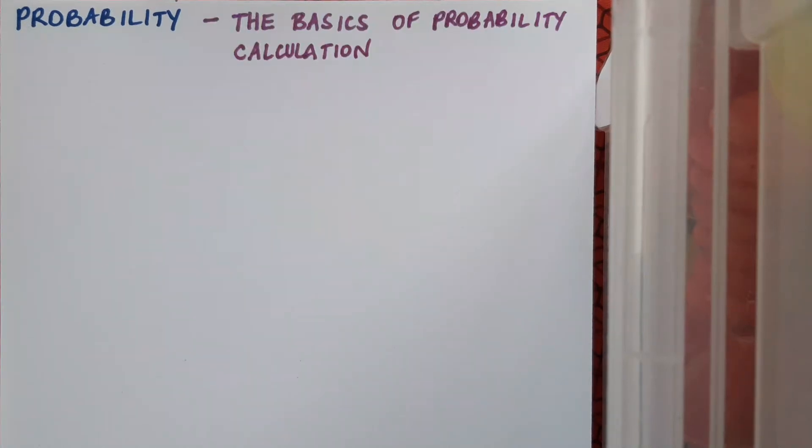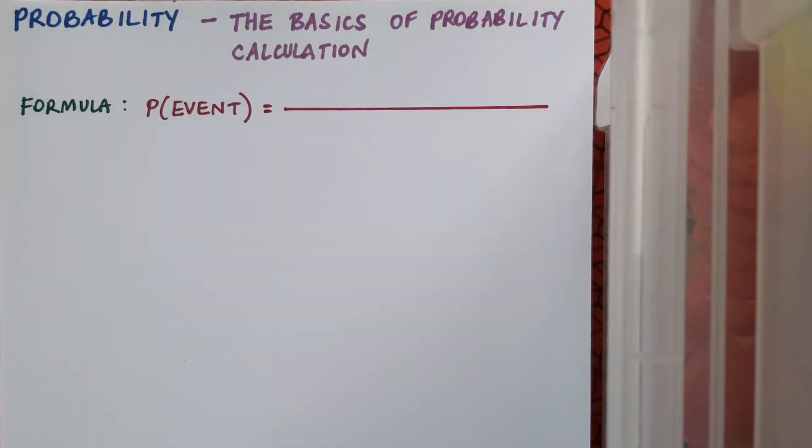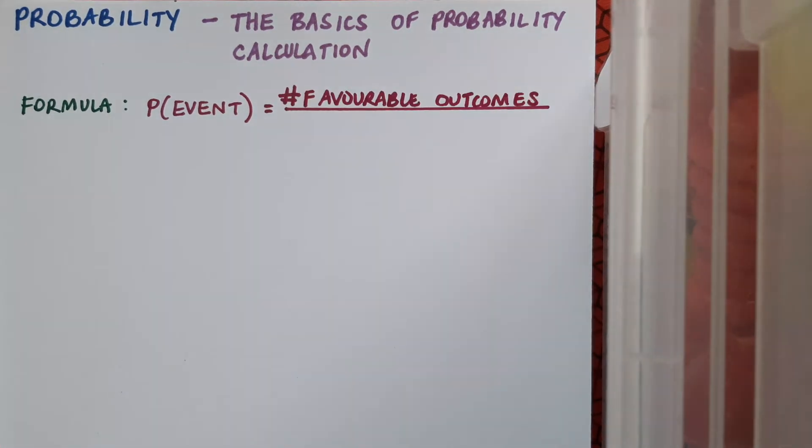In this video on probability we'll be looking at the basics of probability calculation. To start off, I'm going to introduce the formula for calculating basic probability, which is that the probability of an event occurring equals the number of favorable outcomes over the total number of possible outcomes.